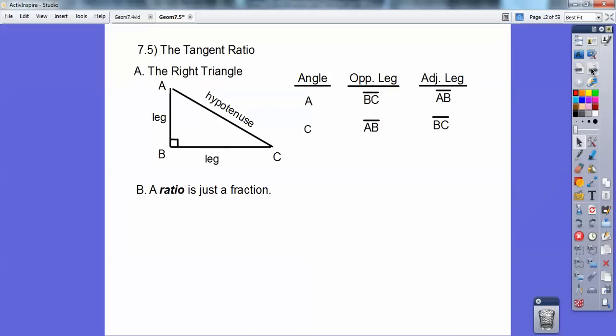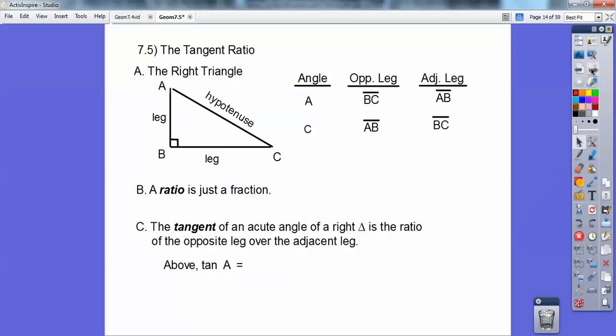And then we're going to come across ratio. Ratio just means a fraction. So the tangent of an acute angle of a right triangle is the ratio of the opposite leg over the adjacent leg. Above, the tangent of angle A would be the opposite leg over the adjacent leg. It's just a fraction, it's just a ratio.